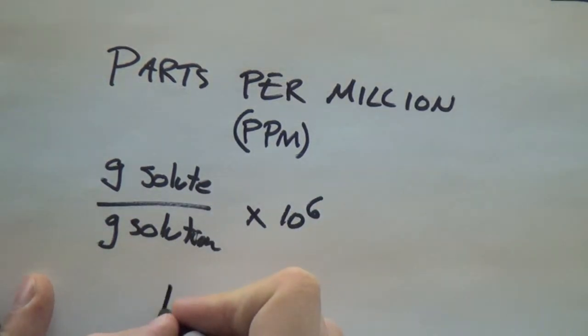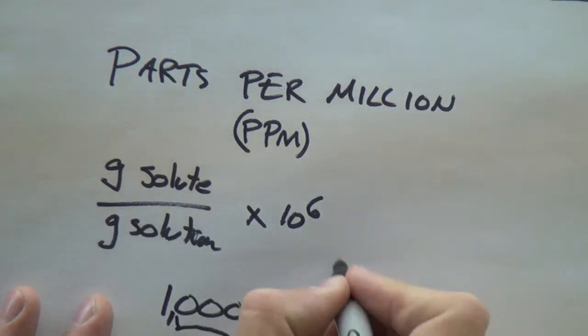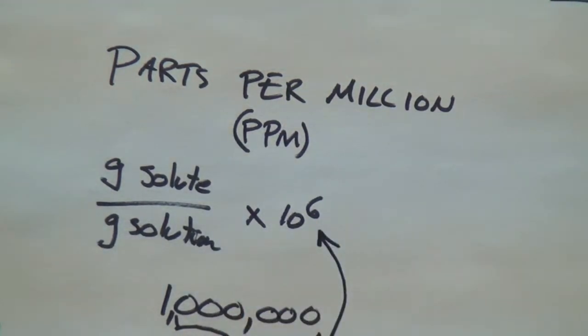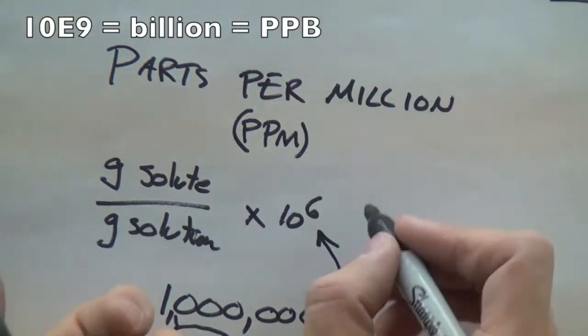So the formula is grams of solute divided by grams of solution times ten to the six. That is one with six zeros. Isn't that a neat math trick? Six zeros. That's a million. Not to be confused with nine zeros, which would be a billion.